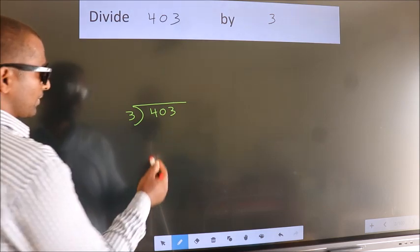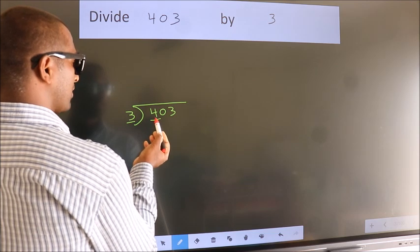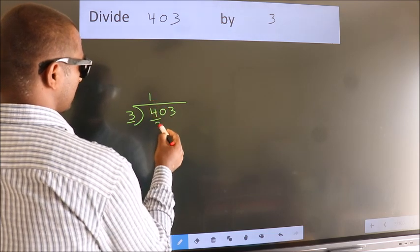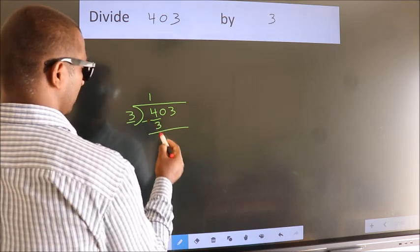Next, here we have 4, here 3. A number close to 4 in the 3 table is 3 once 3. Now we subtract and we get 1.